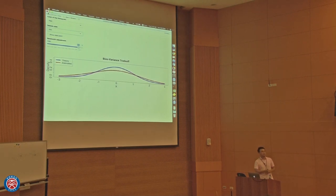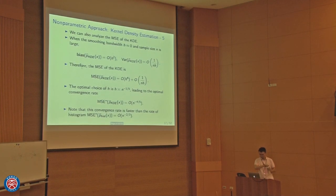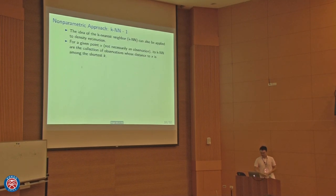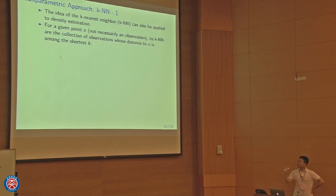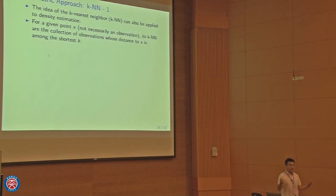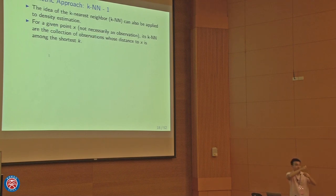There's another approach called the k-nearest neighbor (KNN) approach for density estimation. When the dimension or sample size is large, KNN is computationally fast. For any given point x, the k-nearest neighbors are the k observations whose distance to x is among the k smallest. Let r_k(x) be the distance from x to its k-th nearest neighbor observation.